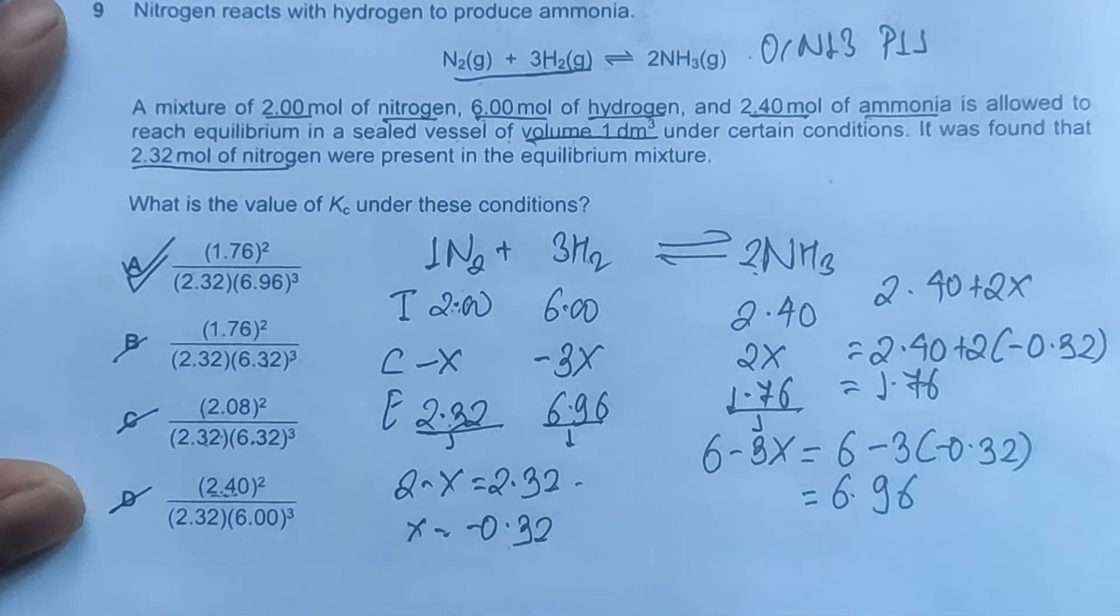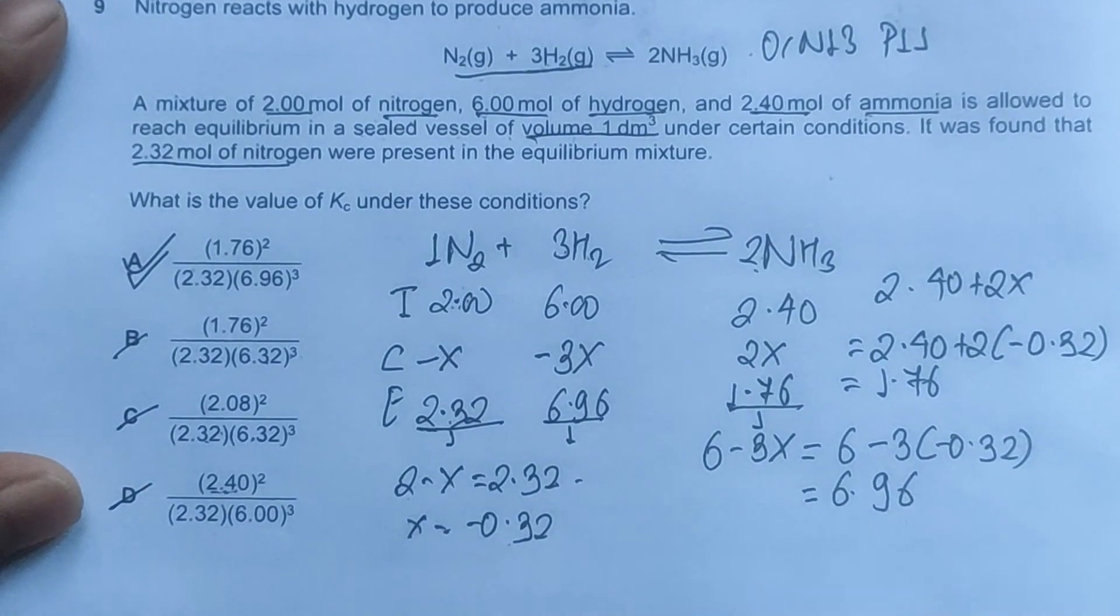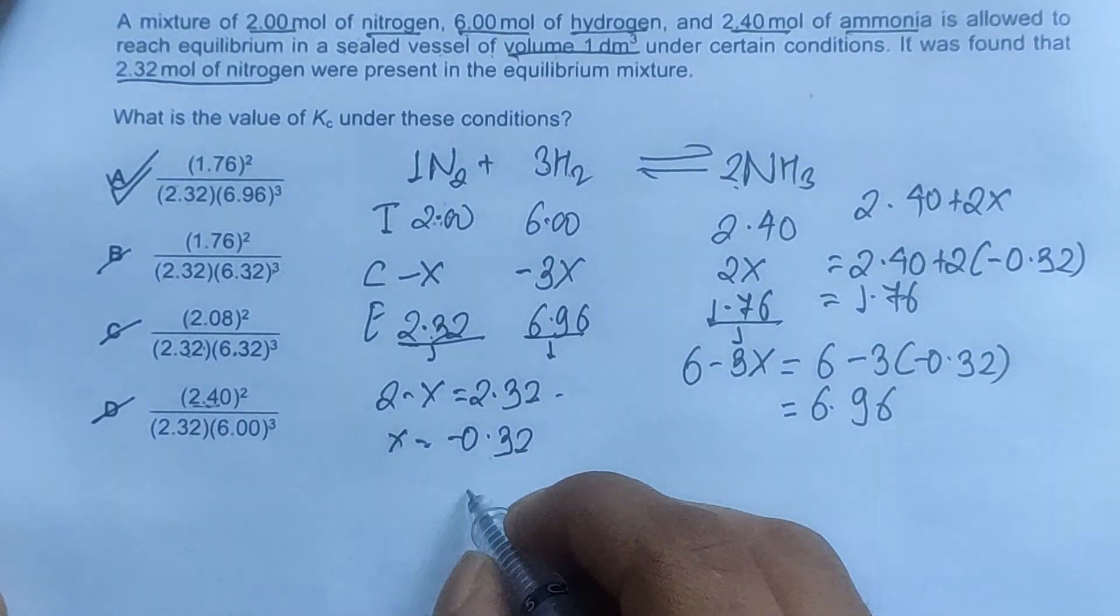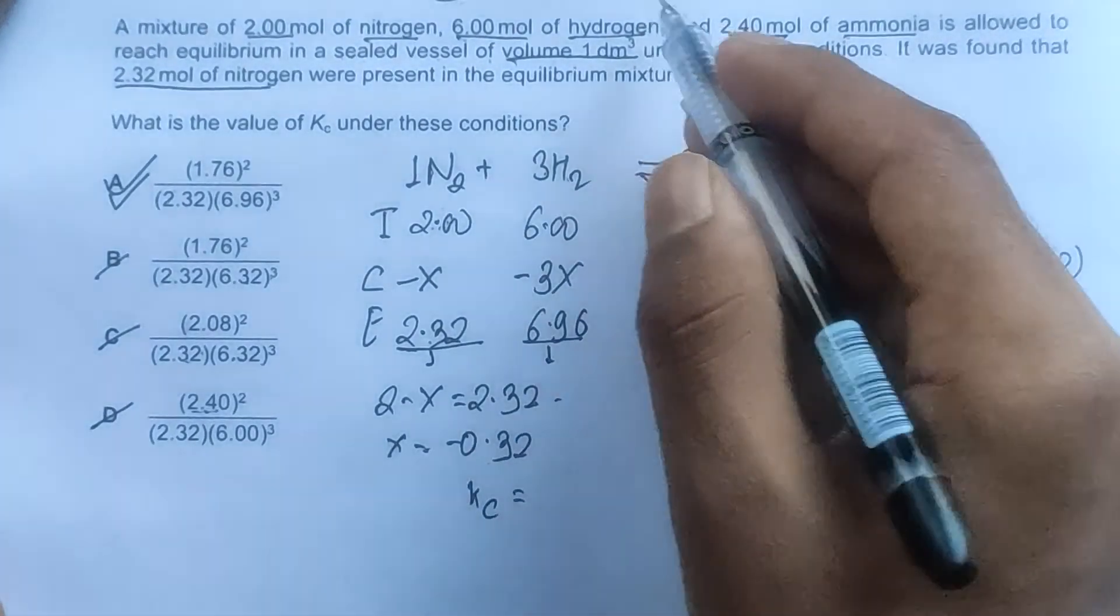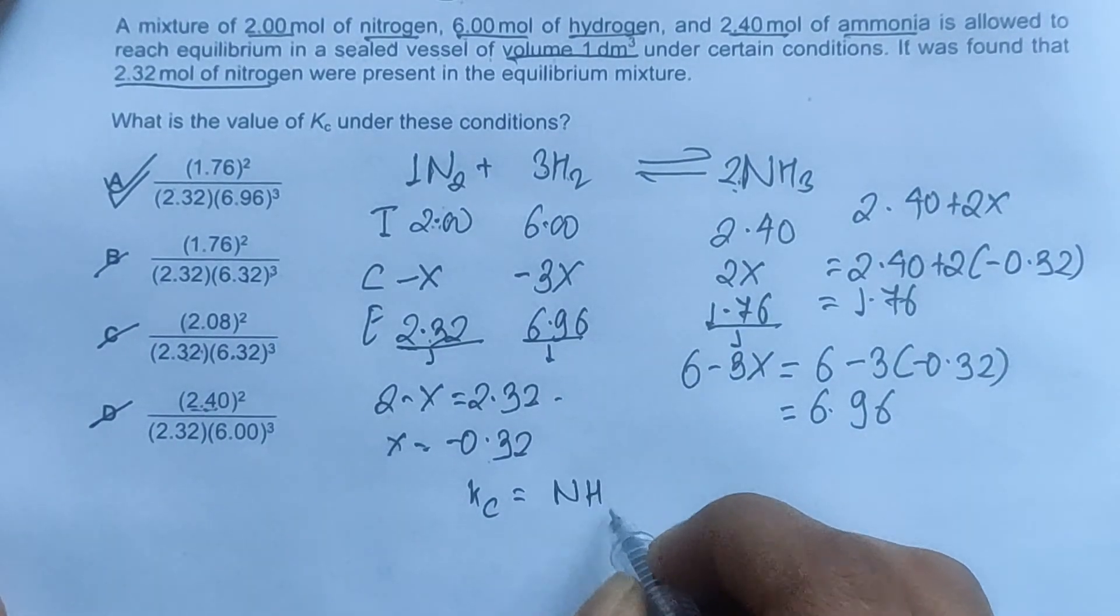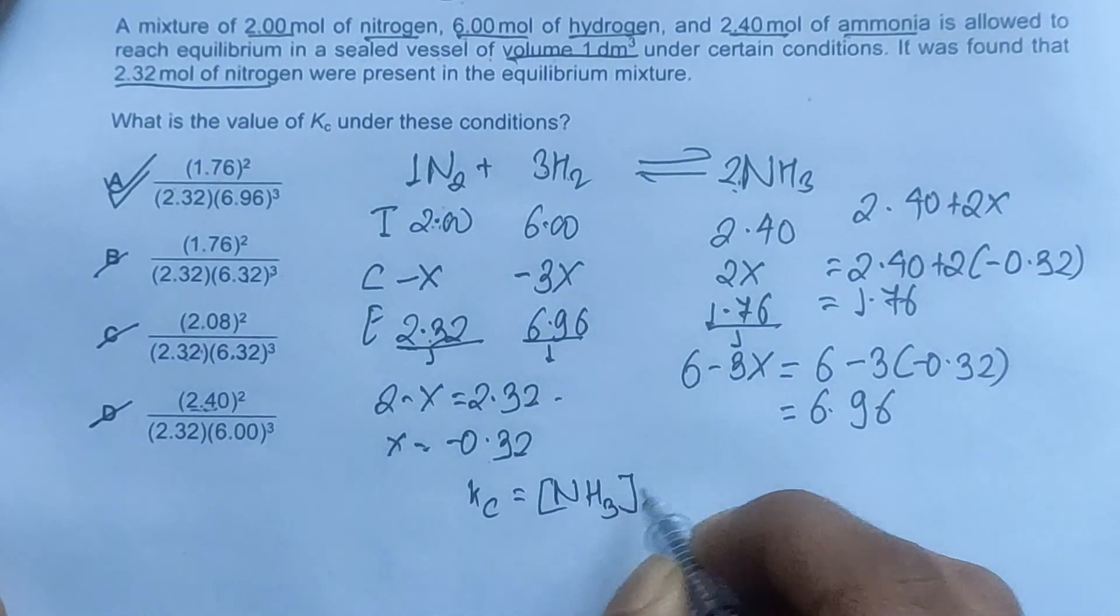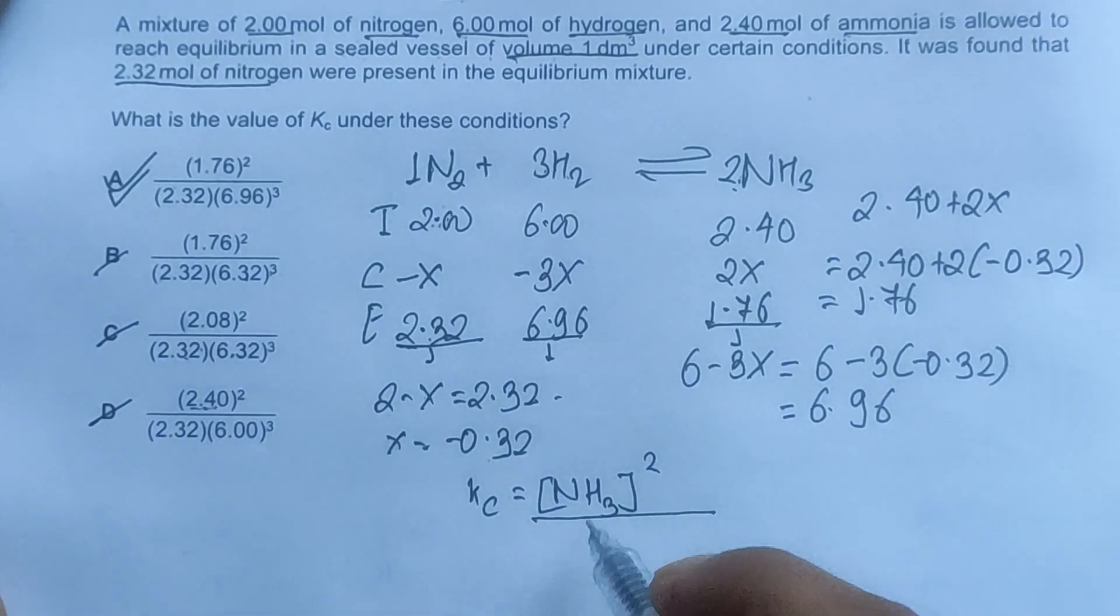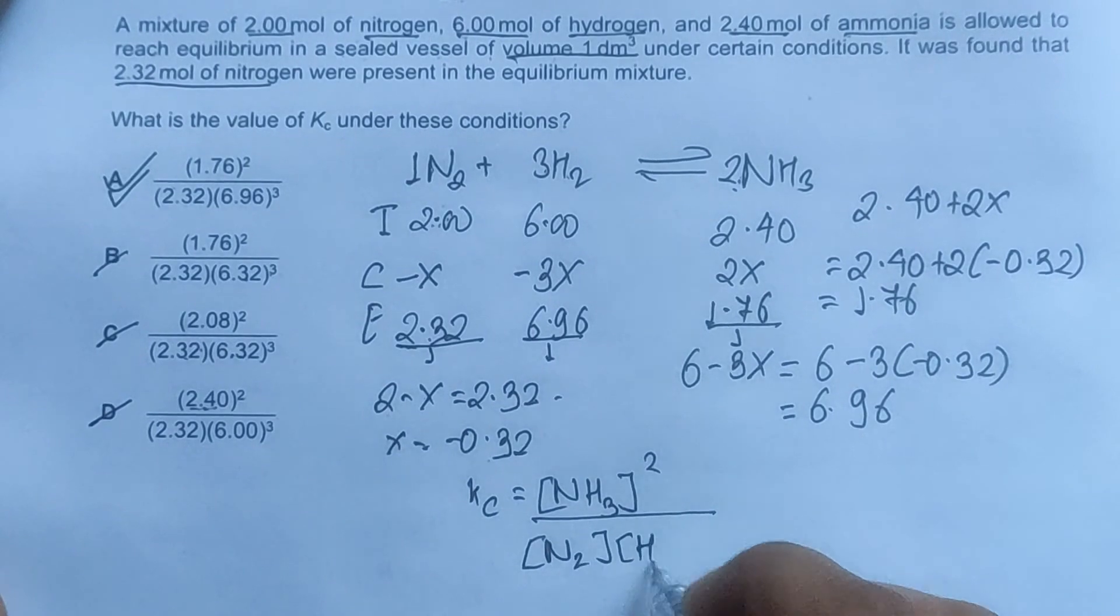Since Kc is concerned with concentration of nitrogen, hydrogen, and ammonia, to get concentration we'll divide moles by volume. Volume is 1 dm³, which means moles and concentration are the same. The Kc expression is Kc equals concentration of NH₃ squared divided by concentration of nitrogen times concentration of hydrogen cubed.